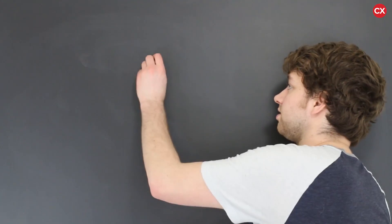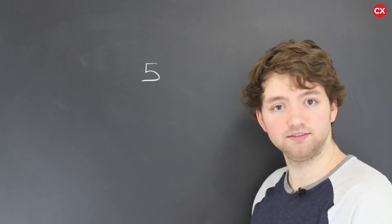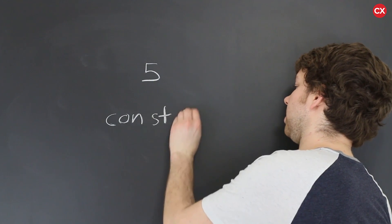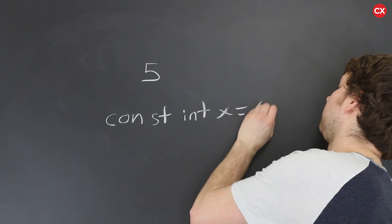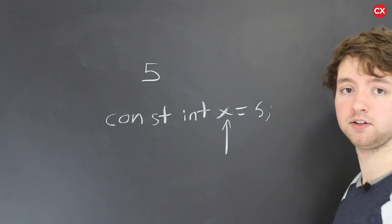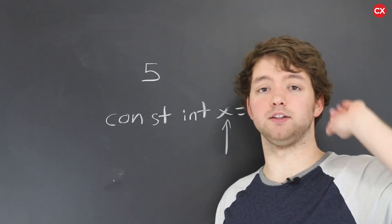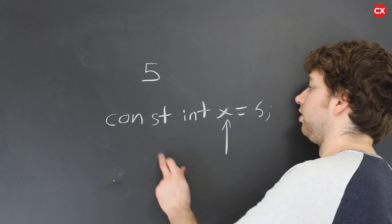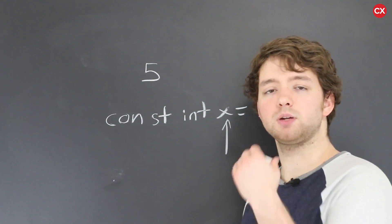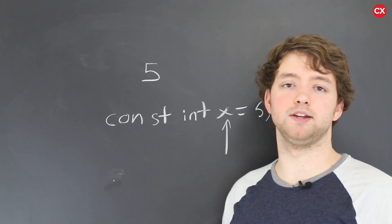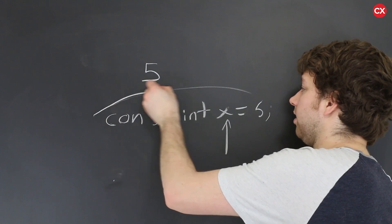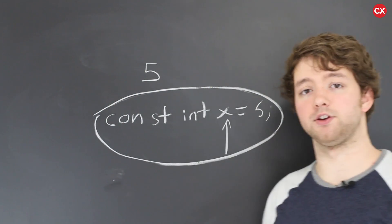Then we touched on constants and learned about three types of constants. There are literal constants such as a value like five. Then there are symbolic constants where we prefix a variable with the keyword const — so x here would be a symbolic constant. Then we even touched on macro constants, which are defined at the top of your code outside of your functions. We actually talked about a fourth type as well, which is to use an enum to create a constant. Lots of different ways to create constants, but the one primarily preferred is the symbolic constant using const.